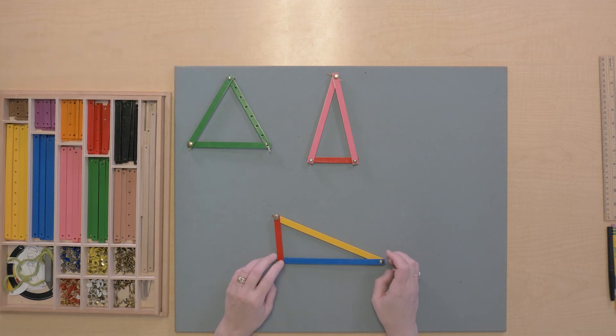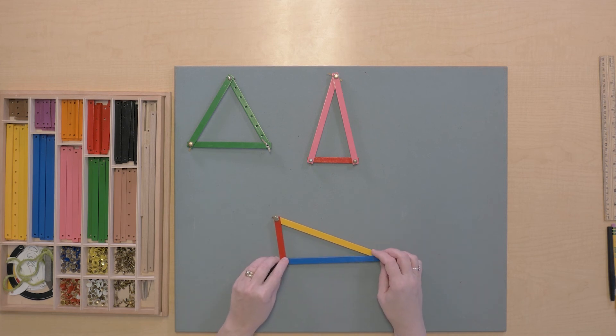And that comes from a Greek word, skelenos, which means unequal or uneven. And that's it. We have three unequal sides.